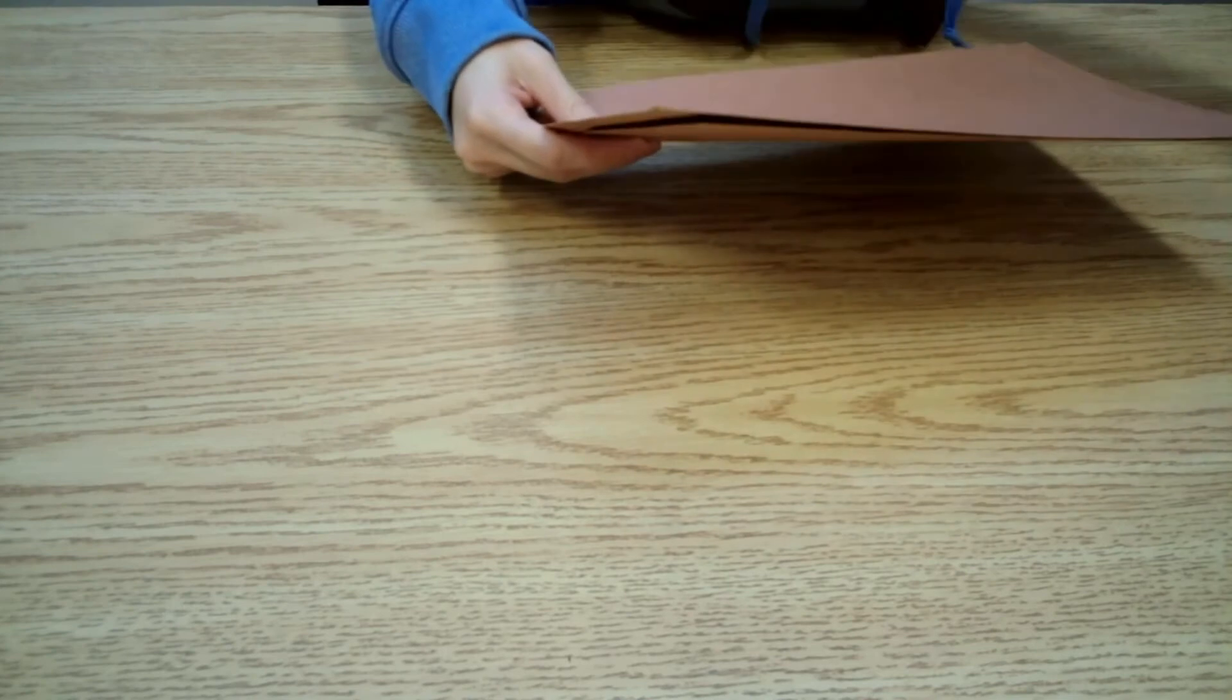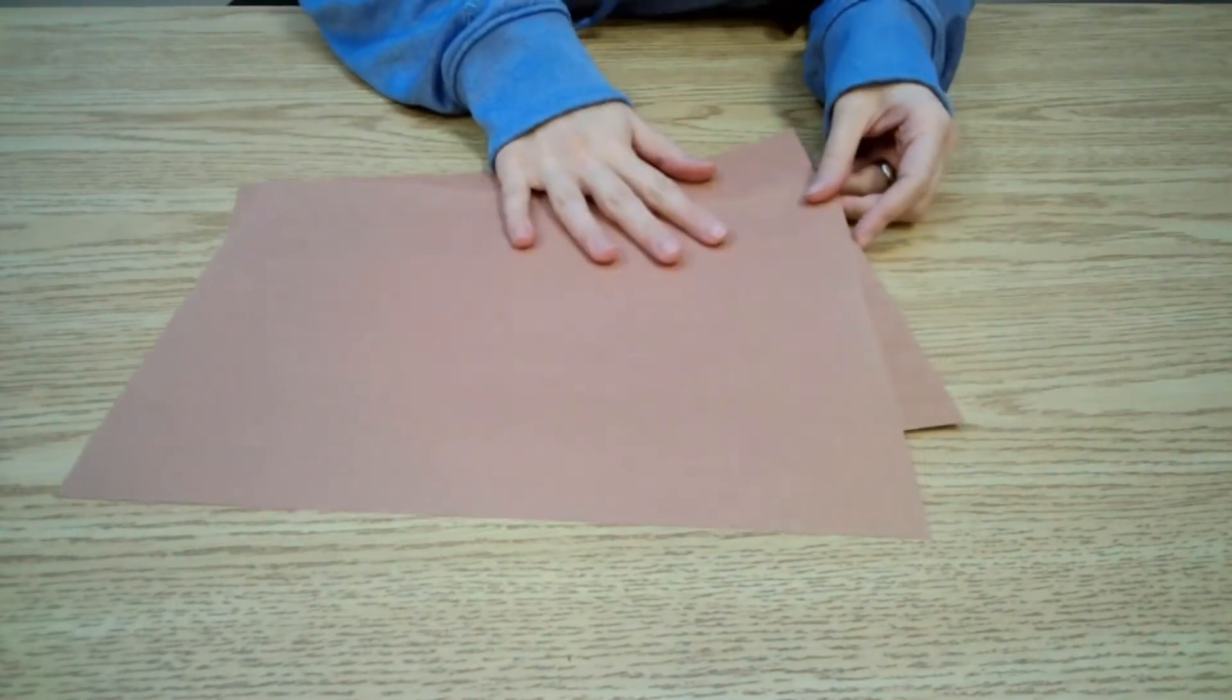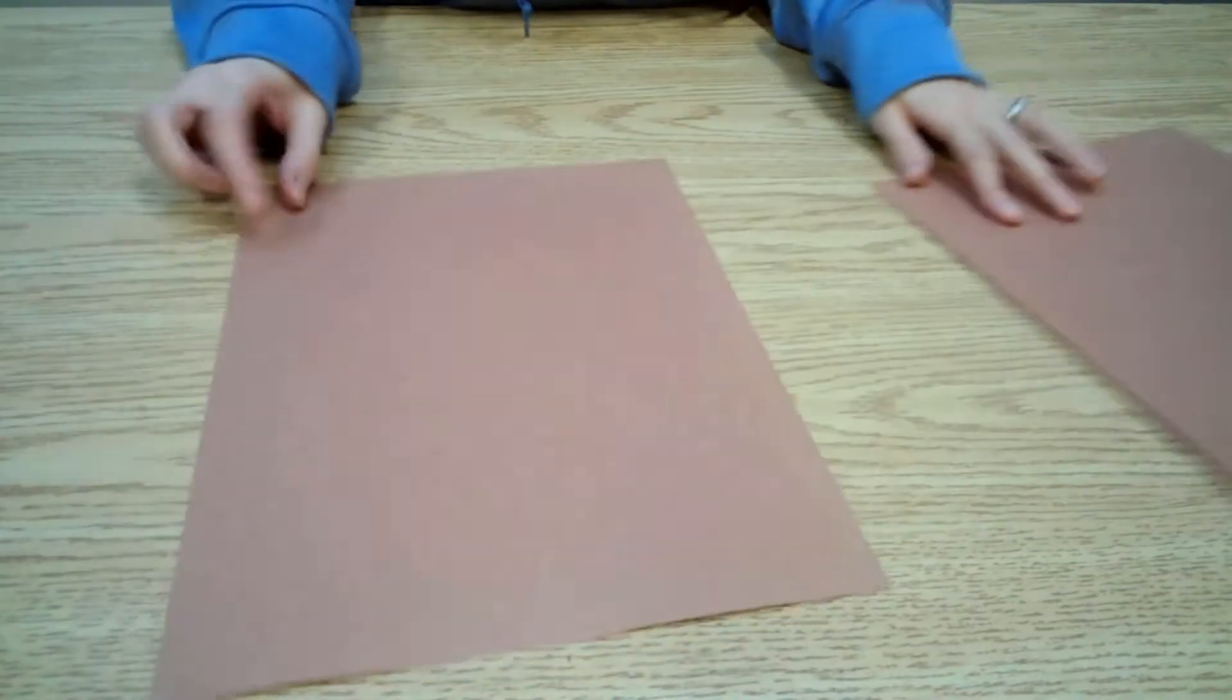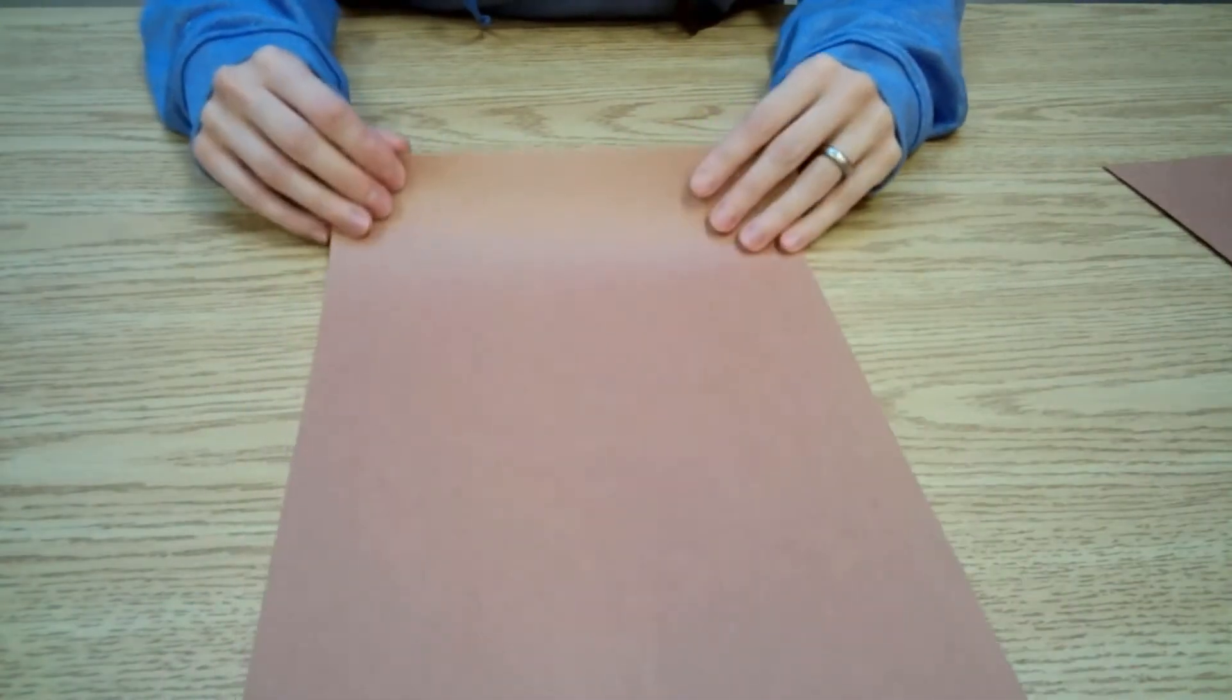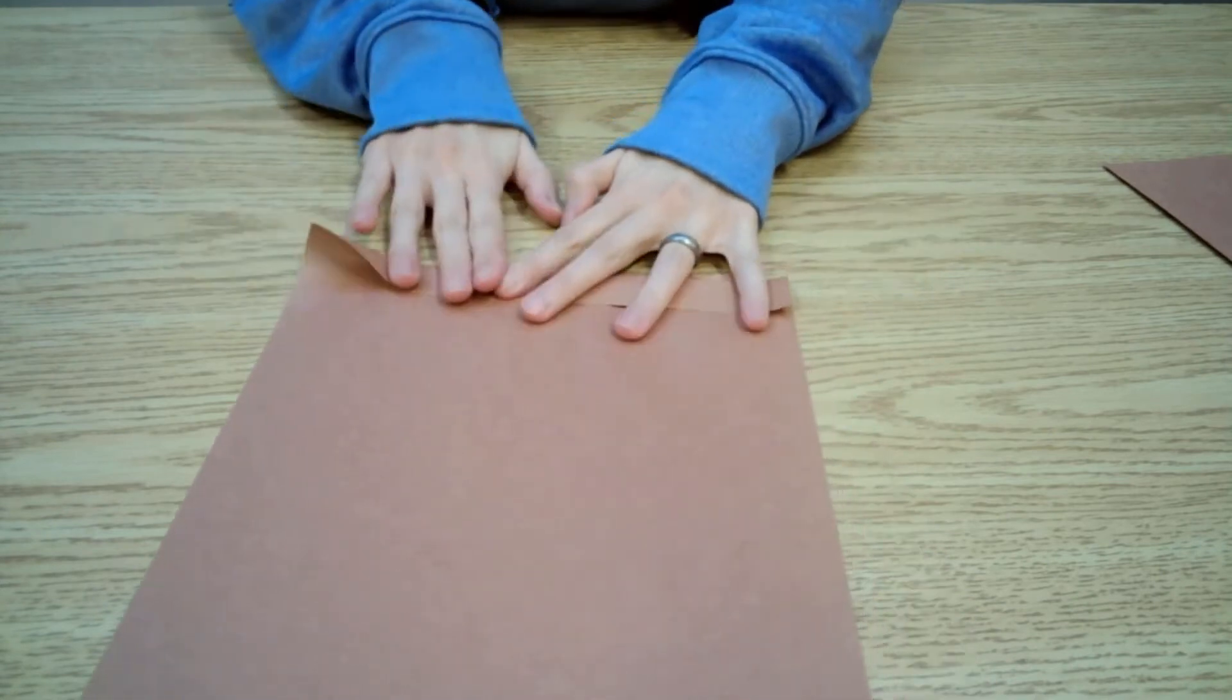To start, we will take two full sheets of paper and do an accordion fold back and forth until you reach the other end, sort of like making a paper fan.